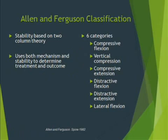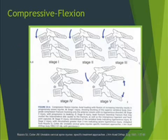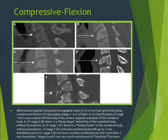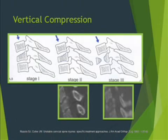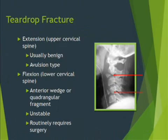Various classifications have been used for the lower cervical spine. Holdsworth classified them into 5 different patterns. Then there was the AO classification as advocated by Maggrel, which was not specific to the cervical spine. The Allen and Ferguson classification caught much favor; stability is based on a two-column theory, using both mechanism and stability to determine treatment and outcome, dividing lower cervical spine fractures into six categories. Compressive flexion injuries range from mild compression in stage 1 to retrolysthesis of more than 3 mm in stage 5.